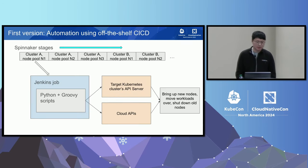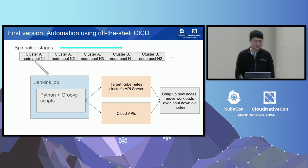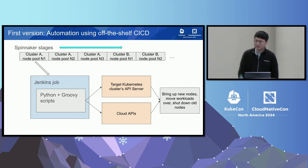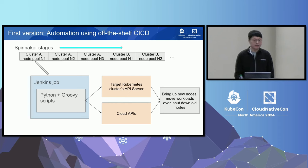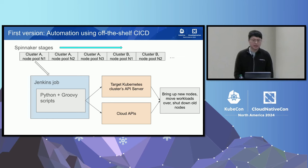Here's the first version we built. It was an automation using off-the-shelf CI/CD. We had Spinnaker and Jenkins at Databricks, so we automated this using a Spinnaker pipeline where every stage corresponds to a Jenkins job. The Jenkins job runs a combination of Python and Groovy scripts. The scripts talk to the target Kubernetes cluster's API server and also the cloud APIs. They bring up new nodes, move the workloads over by draining nodes and evicting pods, and then shut down the old nodes — completing the upgrade of a node pool.